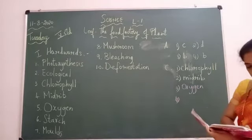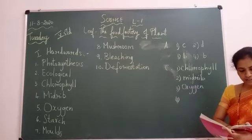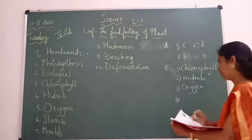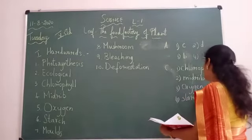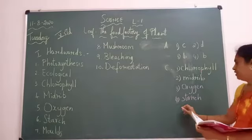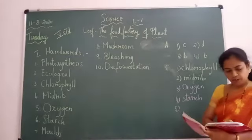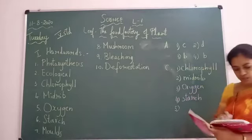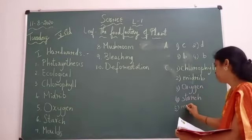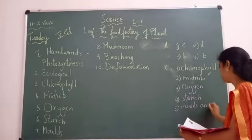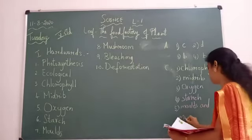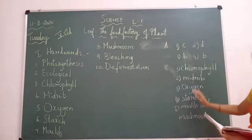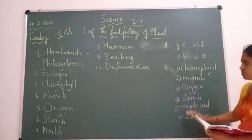Fourth: the food prepared by plants as a result of photosynthesis — answer is Starch. Fifth: plants that get their food from dead and decaying matter — those are Moulds and Mushrooms. So these are the answers for 'Give one term for the following.' You have to write this section in your classwork.